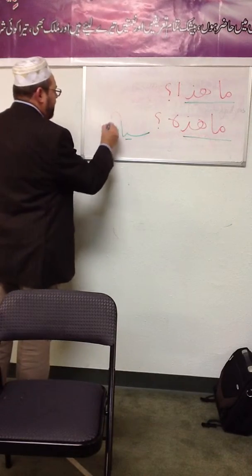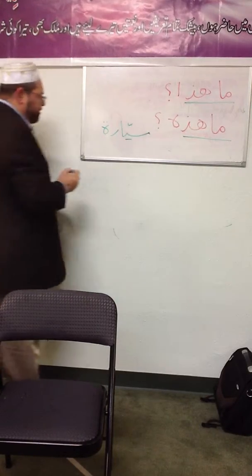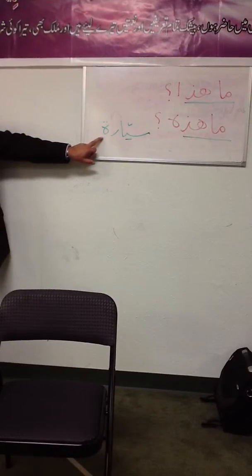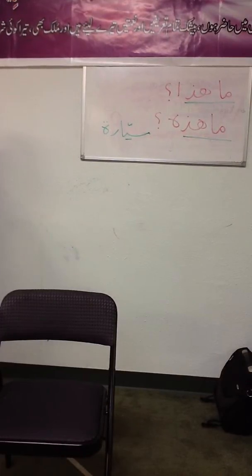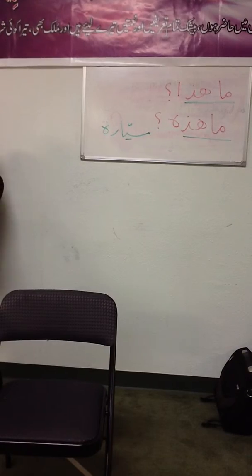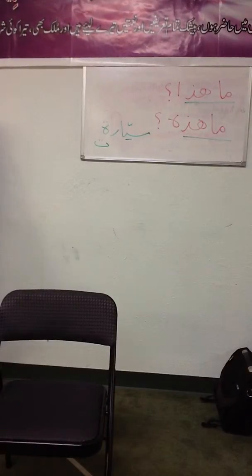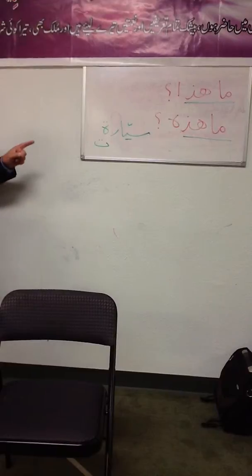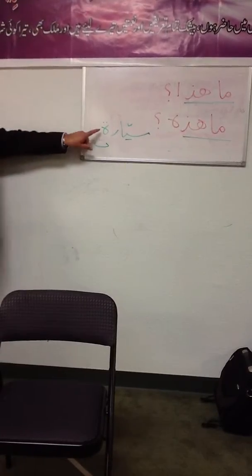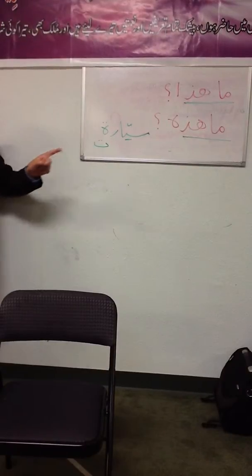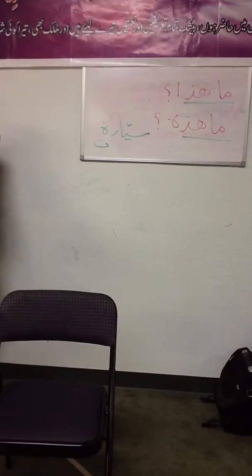In fact, when you say 'sayyara' — your car — notice the ending sound: 'ta.' This ending letter is called ta marboota. Ta is the letter ta, and marboota means 'rounded' — because the shape of this ta is rounded, like a circle with two dots. We have another shape of ta that is flat, called ta tawila. The rounded ta — ta marboota — is a feminine marker in Arabic. Whenever you see it, in most cases it indicates feminine gender.